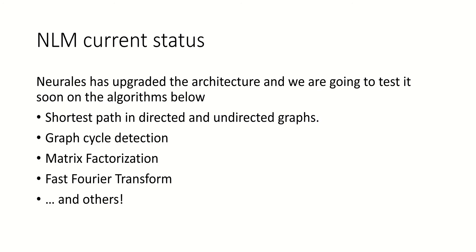The current status is really just upgrading the architecture and testing it on additional algorithms. So far, one of these has been tested and works pretty well — the fast Fourier transform. Some algorithms in the pipeline include shortest path in directed and undirected graphs, detecting cycles in graphs, matrix factorization, and some others. These will of course be published on our website so you can see the NLM learning these processes in real time. Ideally, we'll have people input the structure into the NLM through an API and see for themselves that it actually works.